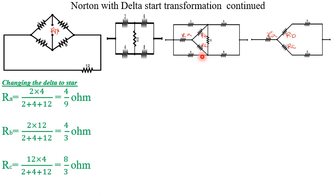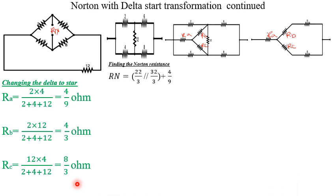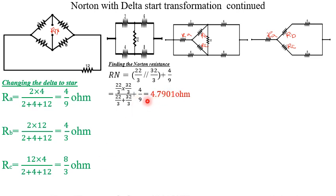We realize that Rb is in series with the 6-ohm resistor, giving 4/3 + 6 = 22/3. Similarly we add the other series combinations. Then these two branches become in parallel, and that parallel combination becomes in series with Ra (4/9). Performing the mathematics, we get the Norton resistance RN as approximately 4.7901 ohms.